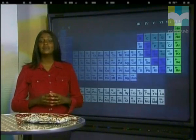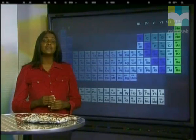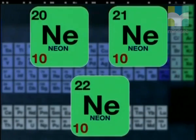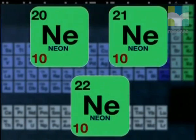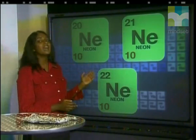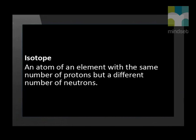I want to tell you about a scientist named Aston. He discovered that not all atoms of the same element have the same number of neutrons. Look at the element neon, for example. Some of its atoms have ten protons and ten neutrons. Other atoms have ten protons but eleven neutrons. The rest have ten protons and twelve neutrons. These are called isotopes of neon. What remains constant in all three types of neon atoms is the number of protons. So we can define an isotope of an element as an atom with the same number of protons but a different number of neutrons.